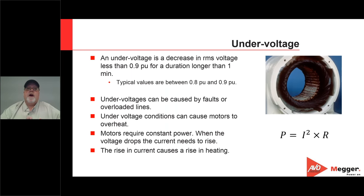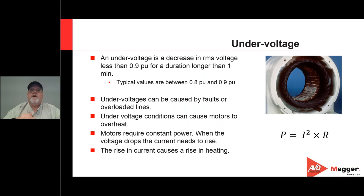Under voltage is defined as a decrease in the RMS voltage of less than 0.9 per-unit for a duration longer than one minute. So 0.9 per-unit means basically 90% of the voltage — if my voltage is 100 volts and it drops below 90, I'm below my 0.9 per-unit. For an under voltage to occur, it also has to last longer than one minute. That's important for an under voltage scenario.